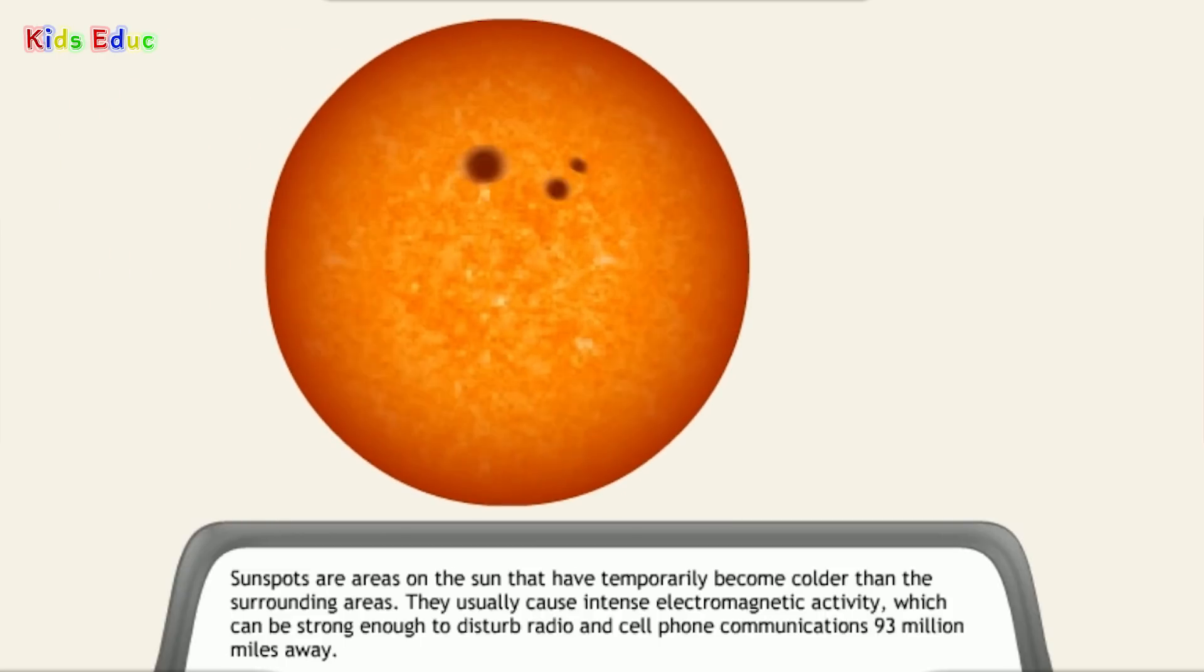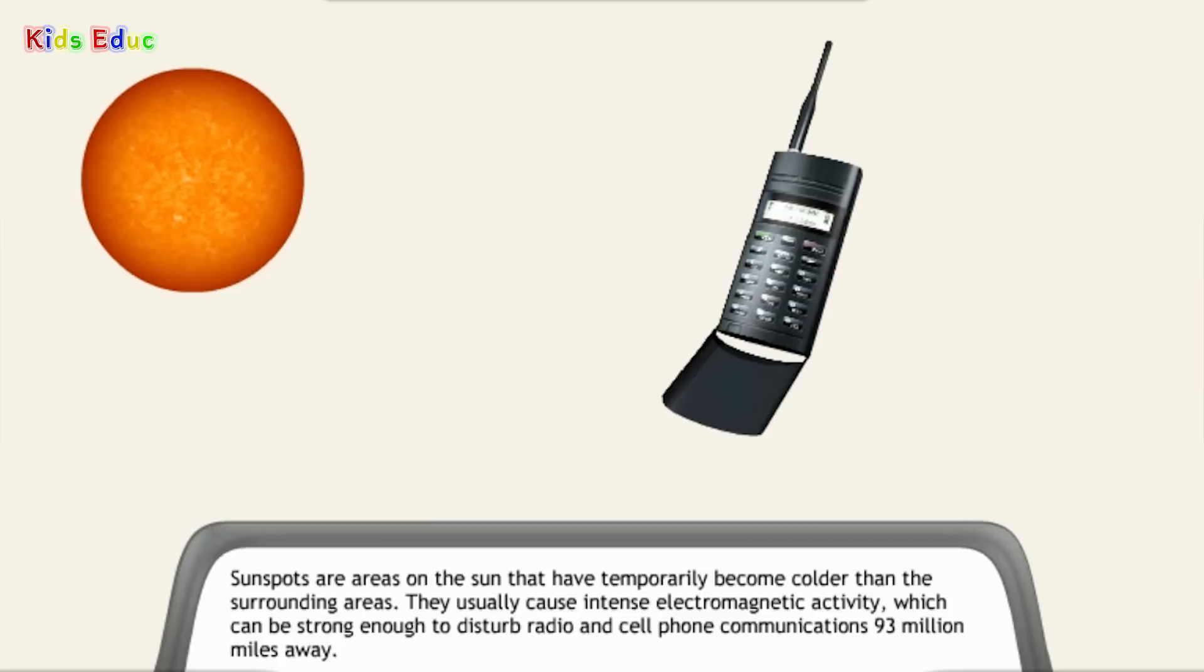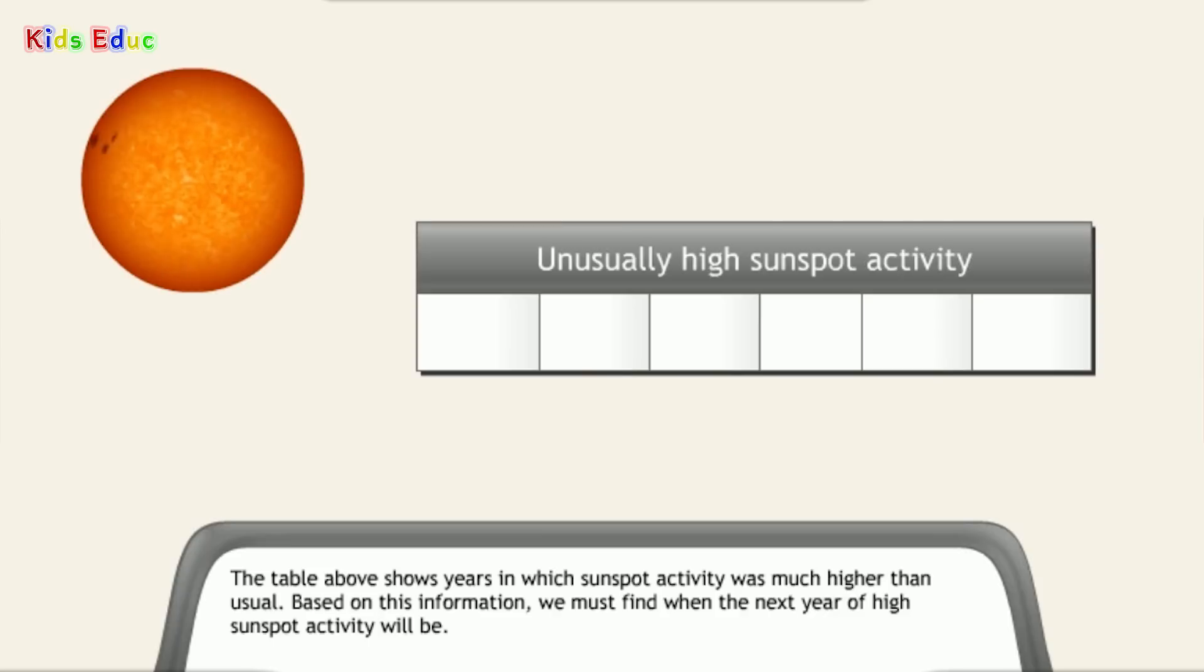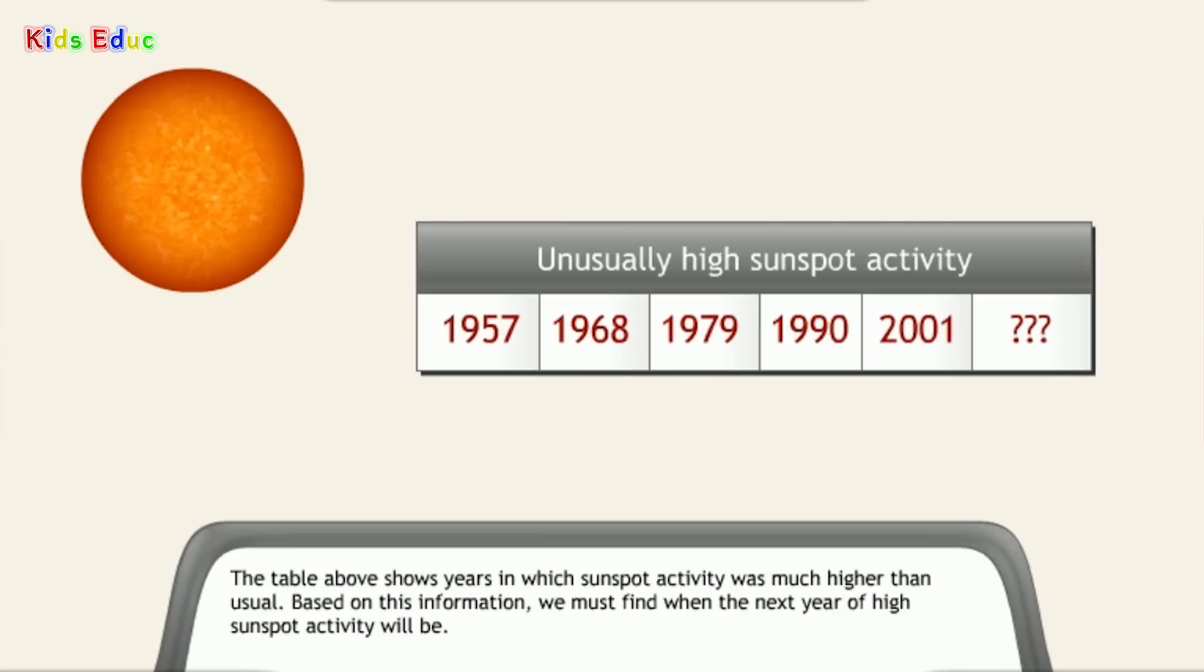Sunspots are areas on the sun that have temporarily become colder than the surrounding areas. They usually cause intense electromagnetic activity, which can be strong enough to disturb radio and cell phone communications 93 million miles away. The table above shows years in which sunspot activity was much higher than usual. Based on this information, we must find when the next year of high sunspot activity will be.